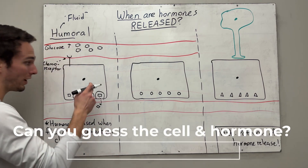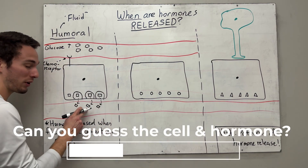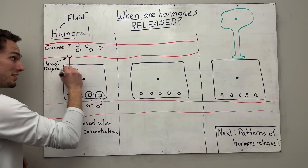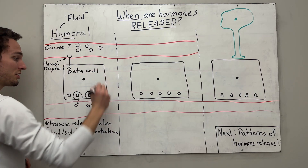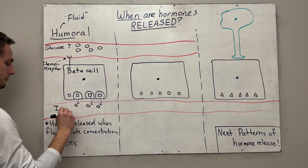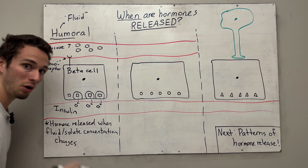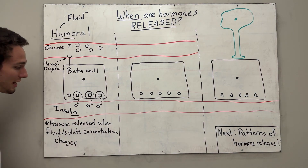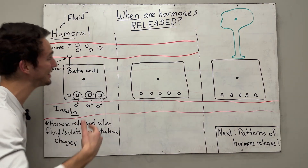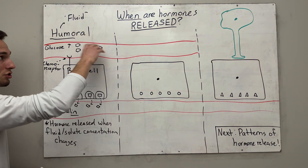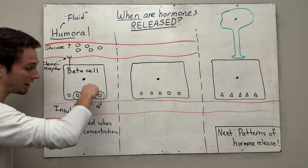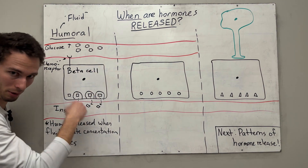When high blood sugar is detected by an endocrine cell with what's called a chemoreceptor, that cell will then release its hormone into the bloodstream. Can anybody guess what cell this is and what hormone this is? Well, this is a beta cell of the pancreas, and the hormone it is releasing is called insulin — a peptide hormone that's going to lower blood sugar levels. That's a great example of a humoral response: some concentration of solute or fluid in the blood tells the endocrine cell to release its hormone.